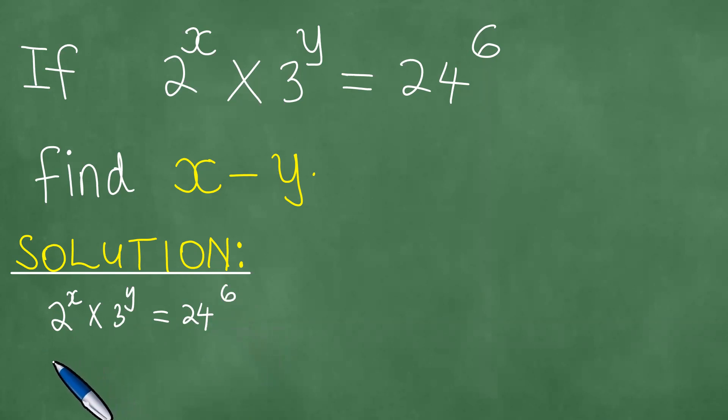And what is this? This is exactly 2 to the power x times 3 to the power y, and this equals what is 24? 24 is 8 times 3, and we have the power 6.